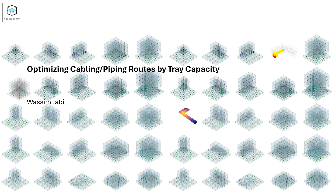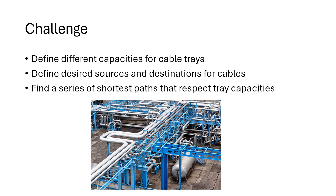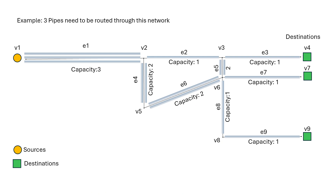The challenge is that we would like to define different capacities for cable trays, define the desired sources and destinations for cables, and then have the algorithm find a series of shortest paths that respect those tray capacities. Here is an example I did in Jupyter Notebook using Topologic Pi.